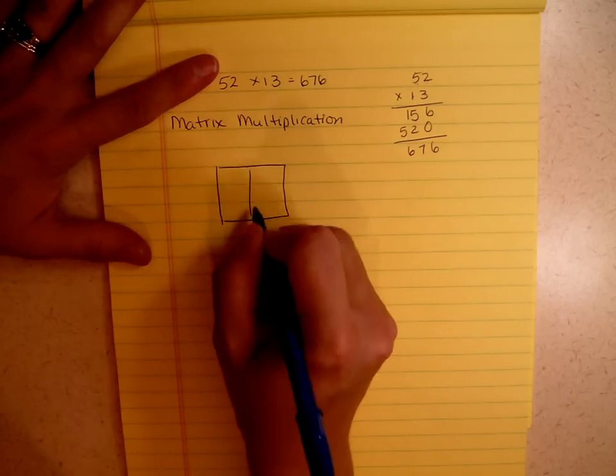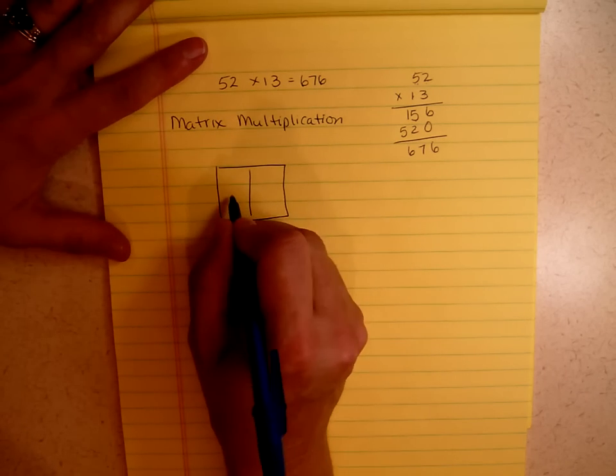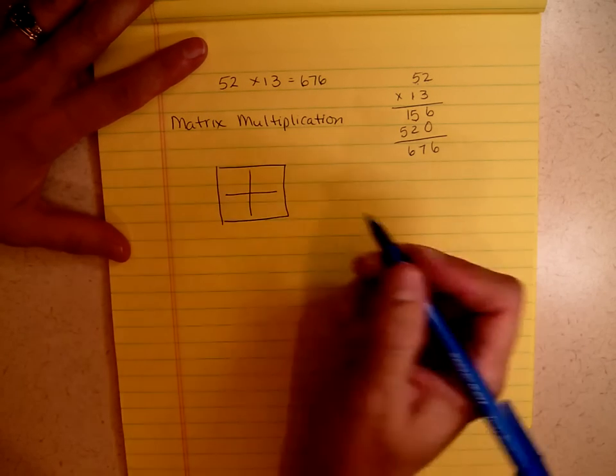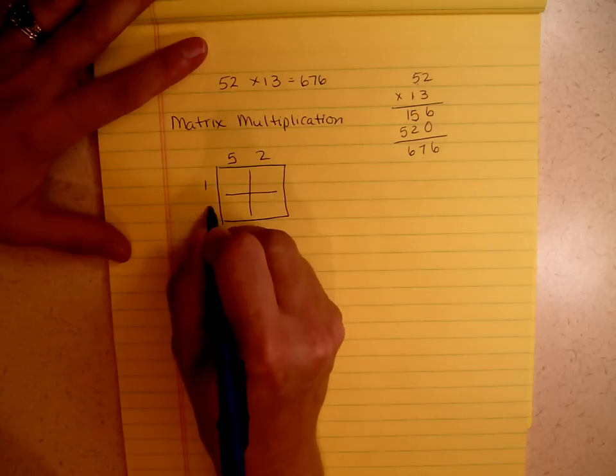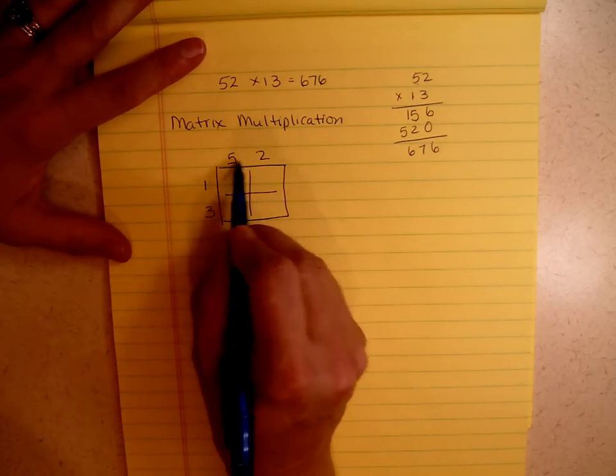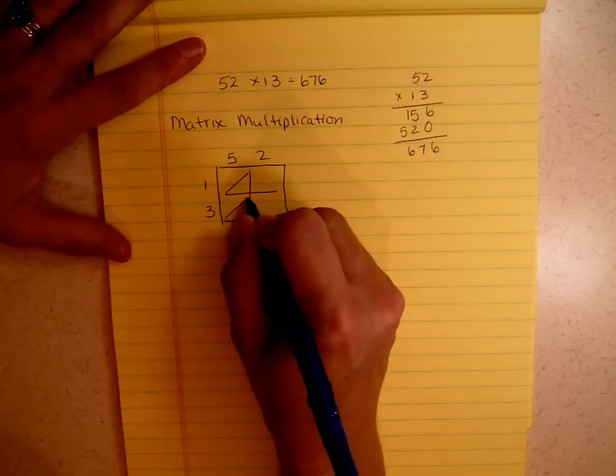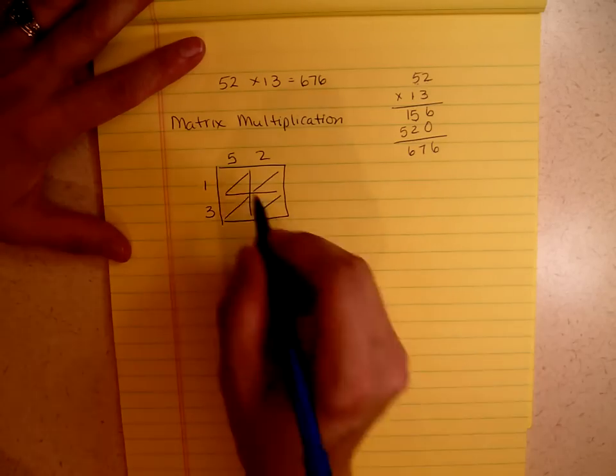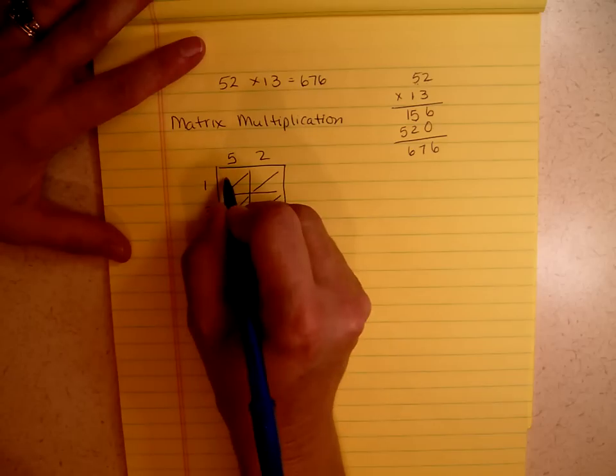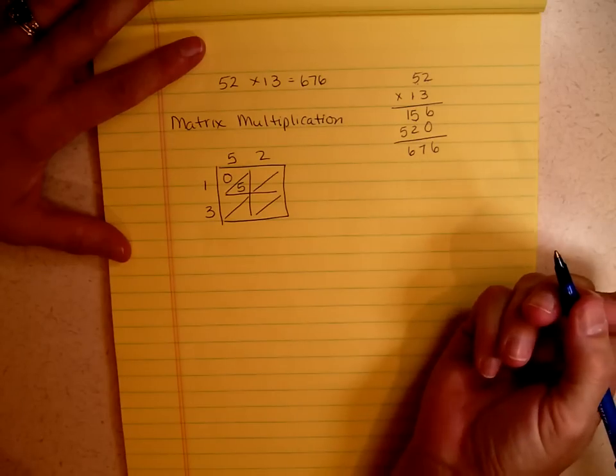Because 52 is a 2 digit number, I'm going to separate it into 2 columns, and because 13 is a 2 digit number, I'm going to separate it into 2 rows. I'm going to put my 5 and my 2, and my 1 and my 3. It doesn't matter which number is on the top and which number is on the side. I'm going to take each of my boxes and split them in half. Now I'm going to start multiplying. 5 times 1 is 5. I'm going to put a 0, 5, because that's really what it is.